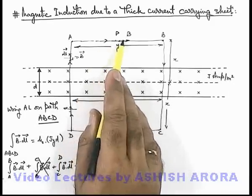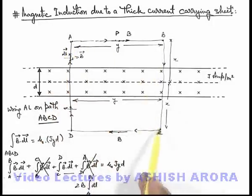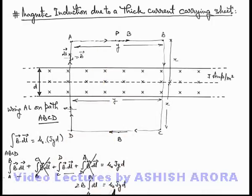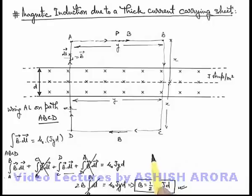So the integrals along DA and BC are zero. By symmetry, from path A to B and from path C to D, the magnetic induction remains uniform, so B·dl can be written as B·dl. This gives twice of B times the integral of dl from A to B, which equals μ₀jyd. The integral of dl from A to B is y, so the y's cancel, giving us magnetic induction B = ½μ₀jd. That is the magnetic induction outside a thick current-carrying sheet — uniform with magnitude ½μ₀jd.